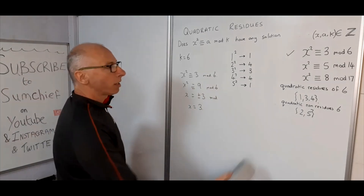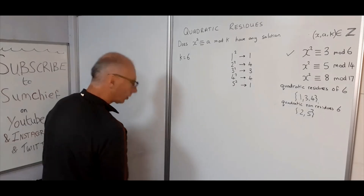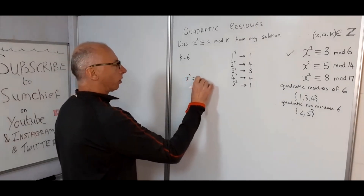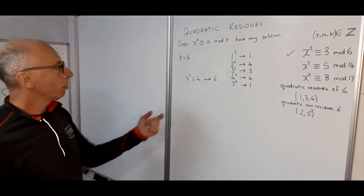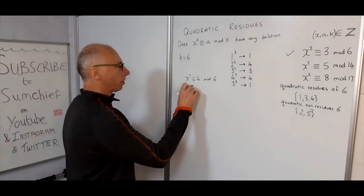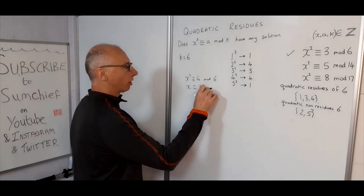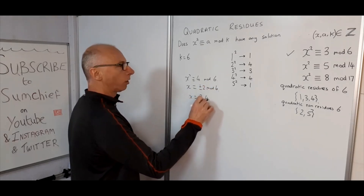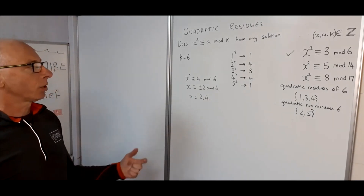Let's also check x² ≡ 4 (mod 6). We can solve this directly: x = ±2 (mod 6), so therefore x = 2 or x = 4. We've got solutions, as expected.